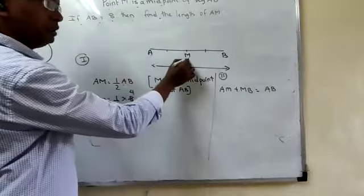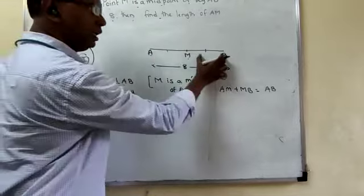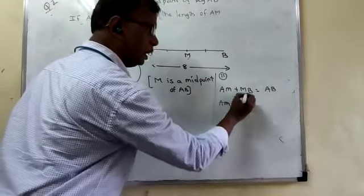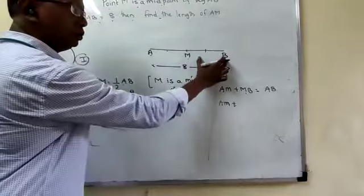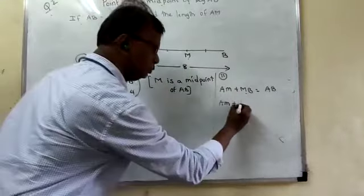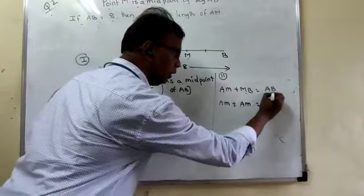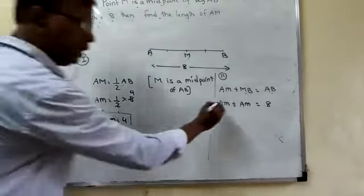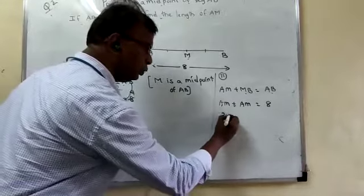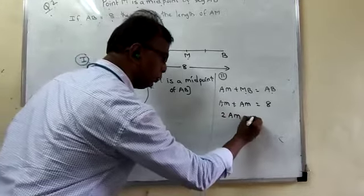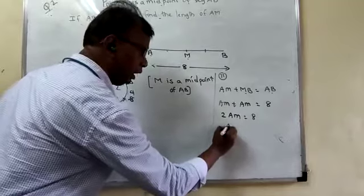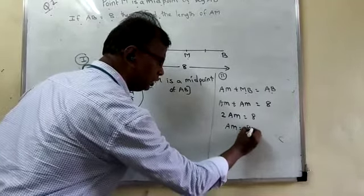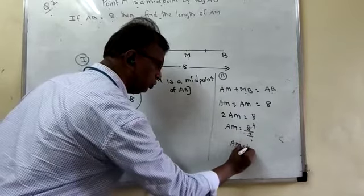But we know that M is a midpoint of AB means this and this are equal. So AM, MB, AM and MB are equal. So in the place of MB, I can add AM now. Both are equal. Is equal to AB. AB is 8. AM plus AM is how much? 2AM is equal to 8. Therefore AM is equal to 8 upon 2. Two ones are two fours. AM is equal to 4.